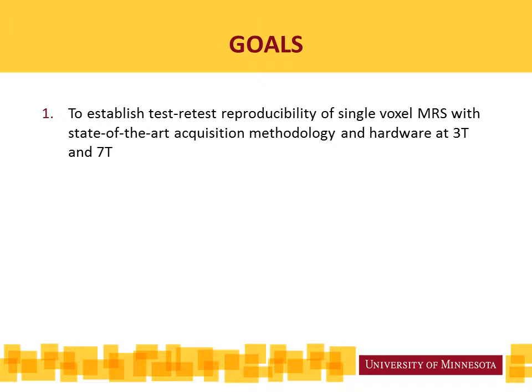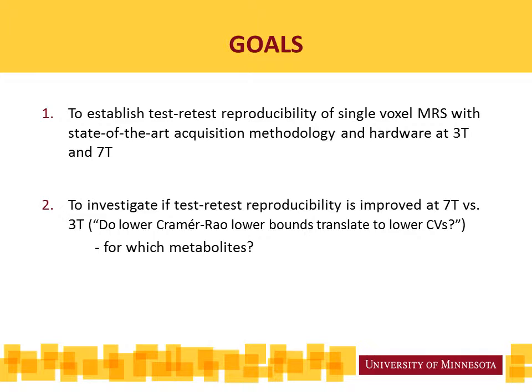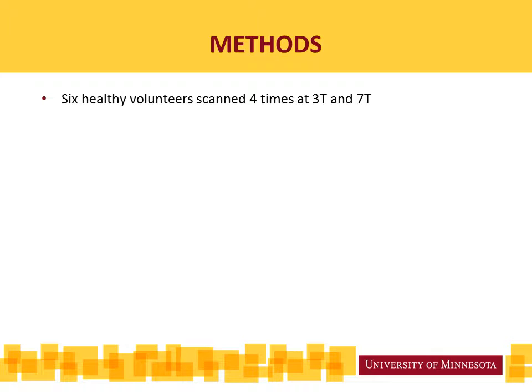Our goals in this work were first of all to establish test-retest reproducibility with state-of-the-art acquisition methodology and hardware at both magnetic fields, and then to compare test-retest reproducibility at 7 tesla versus 3 tesla. A number of studies have shown that lower Cramér-Rao lower bounds are obtained at 7T versus 3T, but we asked the question if those in fact translate to lower test-retest coefficients of variance and if so, for which metabolites.